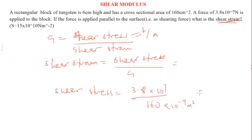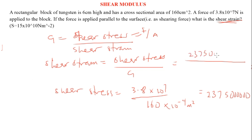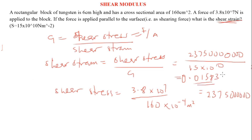Dividing by G, the shear stress works out to 2,375,600 — that is, approximately 2.3756 times 10 to the 6 — divided by G, where G is 15 times 10 to the 10. Therefore, the shear strain equals 0.01583. The result has no unit because the units cancel out.